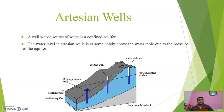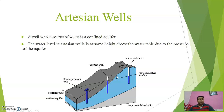Artesian well: a well whose source of water is the confined aquifer is known as an artesian well. The water level in the artesian well is at some height above the water table, because the pressure of the aquifer is so great that the water level rises above the actual water table.